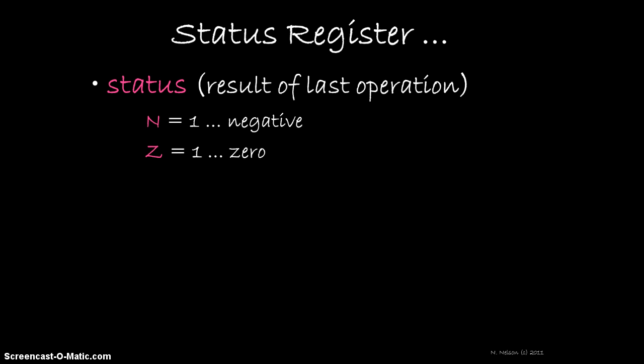A result is considered to be zero if every bit in that value is zero. If this occurs, then the zero bit, usually represented by the letter Z, is set to a one. Otherwise, it's cleared.